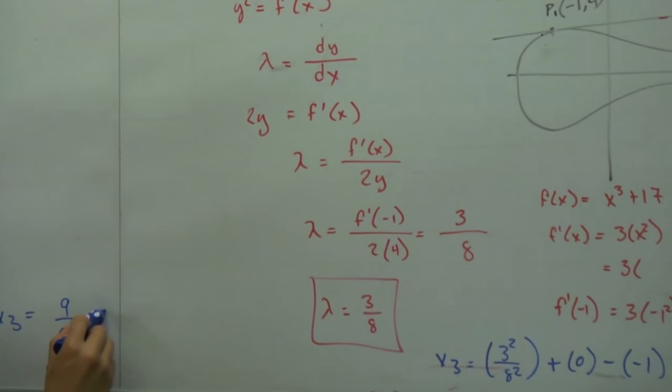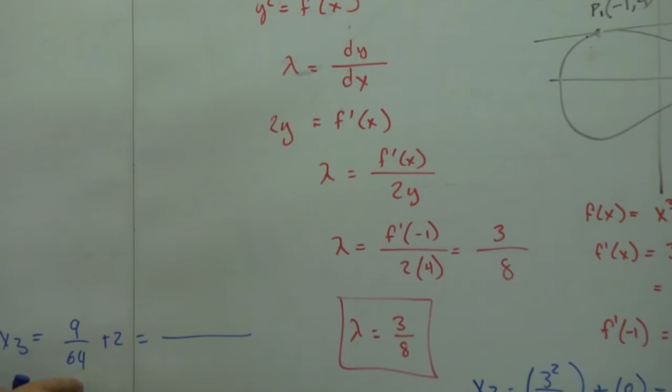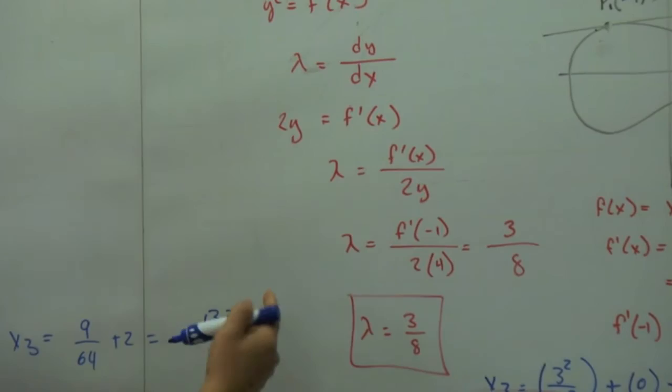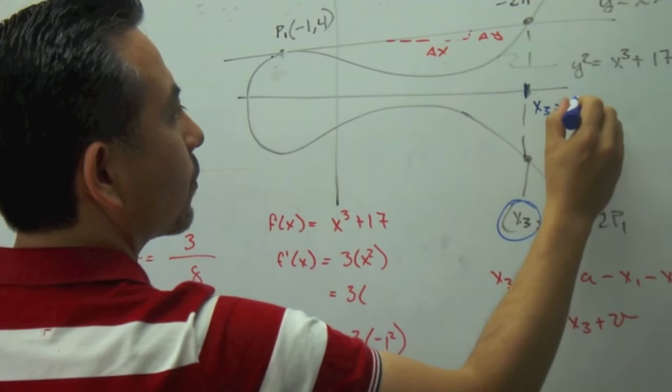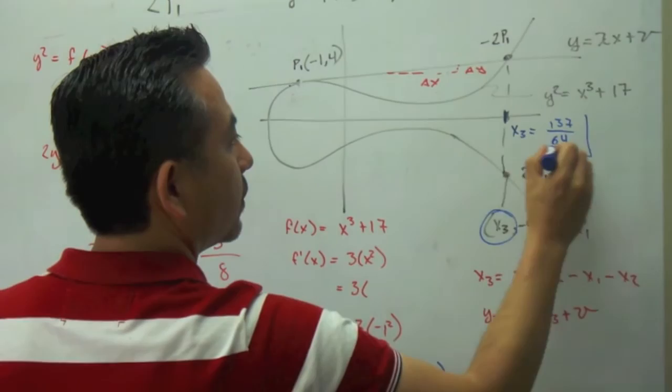So this is equal to 64 times 2, that's 128, 127 over 64. So x3 equals 127 over 64.